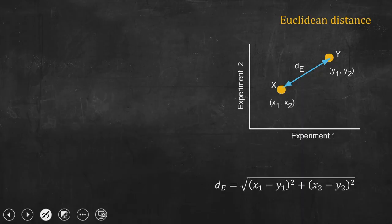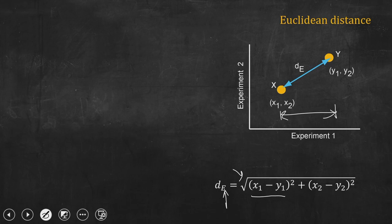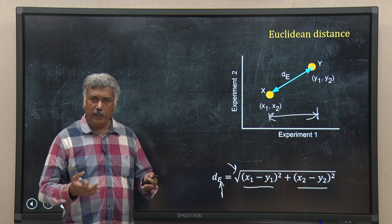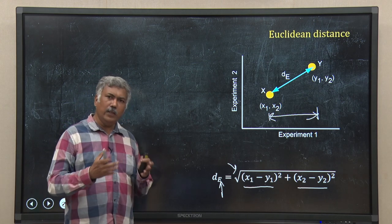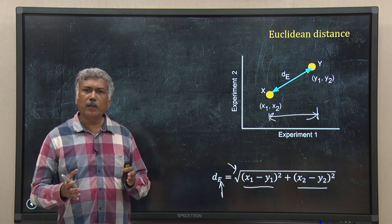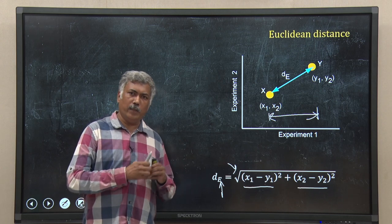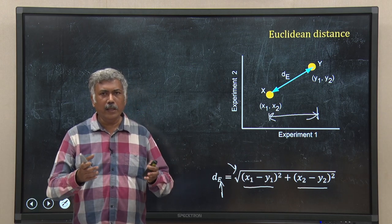The Euclidean distance, which I represent as E, will be equal to the square root of (X1 minus Y1) whole square plus (X2 minus Y2) whole square. This is essentially Euclidean distance — we have all learned that in school. We can use this as a measure of distance between two genes in my experiment, or any other two objects in a clustering problem.